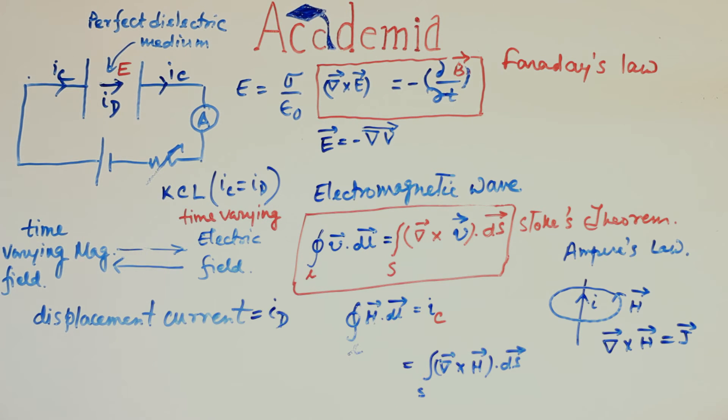Wait, Maxwell just argued that time-varying electric field also produces magnetic field which also turns out to be time-varying in nature. So it should again produce a time-varying electric field which in turn produces time-varying magnetic field and so on. So it is a regenerative, cumulative, reinforcing procedure.